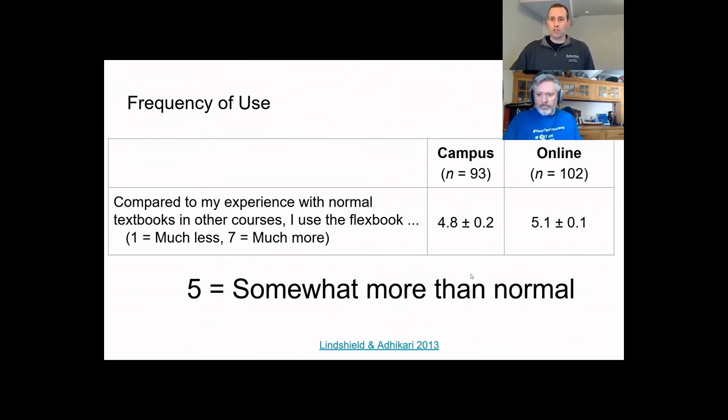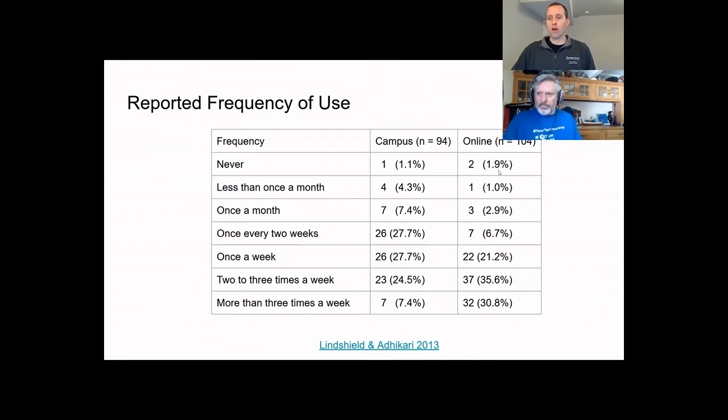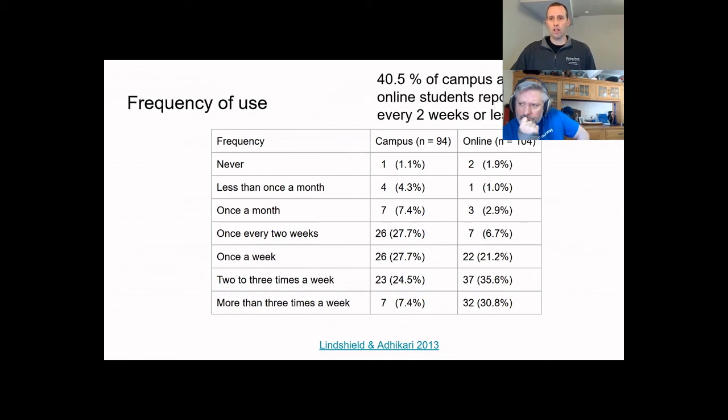So what does that translate to? So there's another question where it asks them to report how frequently they use the resource. And so here you see the same questions are asked, whether it's never, less than once a month, once a month, once every two weeks, once a week, two, three times a week, and then more than three times per week are the questions. And so there's numbers you can see there. But what I really want to highlight is this one. And so that's this is that 40.5% of my campus students and 12.5% of my online students report using it every two weeks or less frequently. And that always stayed with me over a number of years.